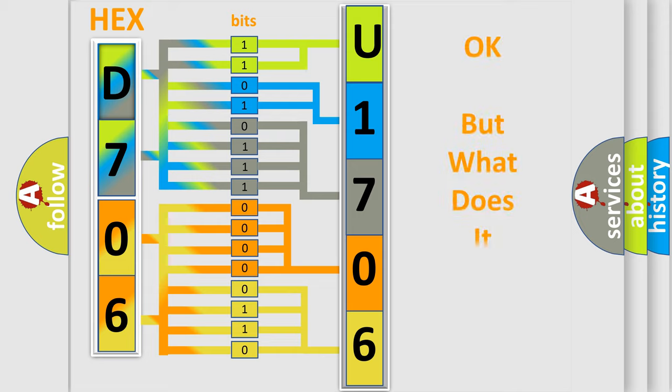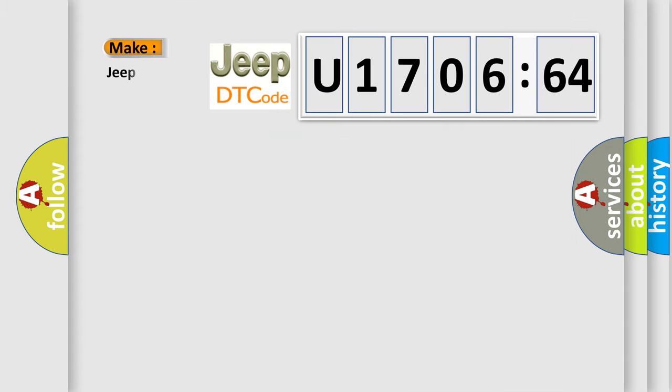We now know in what way the diagnostic tool translates the received information into a more comprehensible format. The number itself does not make sense to us if we cannot assign information about it to what it actually expresses. So, what does the diagnostic trouble code U170664 interpret specifically for Jeep car manufacturers?